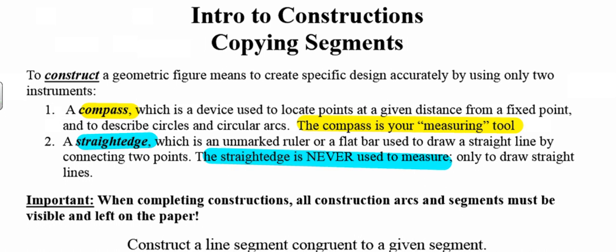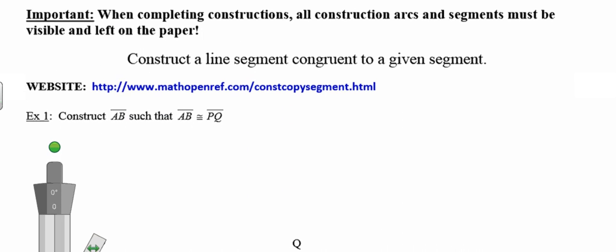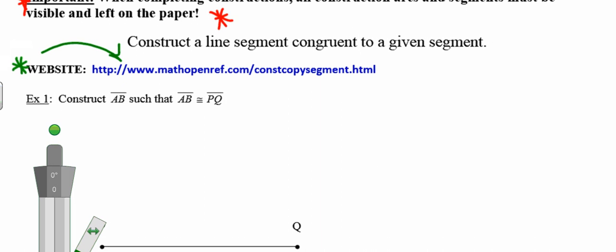Now that you've taken some time to play, be aware that whenever you're completing constructions, all of your construction marks and all of your line segments need to remain on your paper. Those marks are how we grade your constructions — think of your arcs and segments as being your work for constructions. All of the constructions we're going to do are referenced on a website that will walk you through each construction step by step interactively.